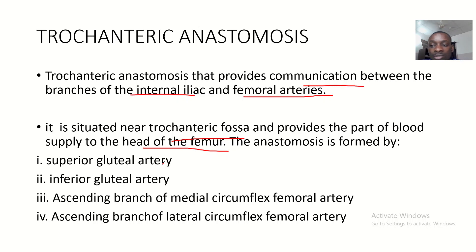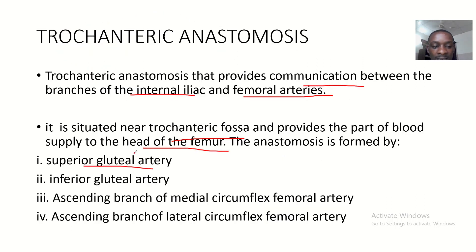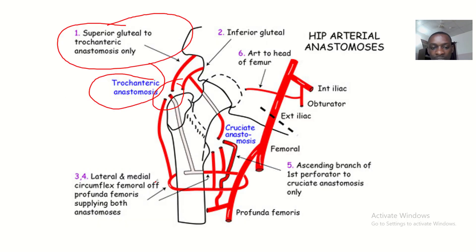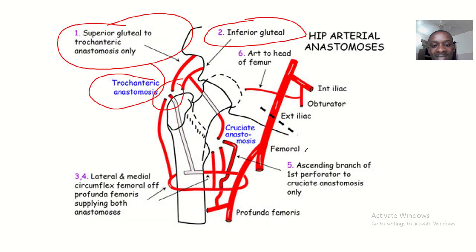The trochanteric anastomosis is formed first by the superior gluteal artery, next by the inferior gluteal artery, and then by the ascending branch of the medial circumflex femoral artery.